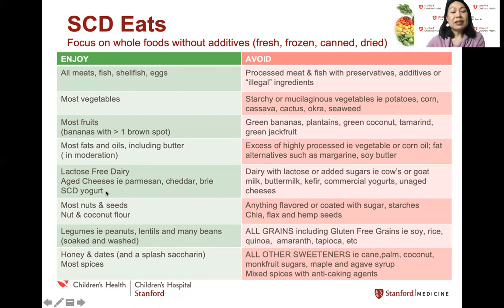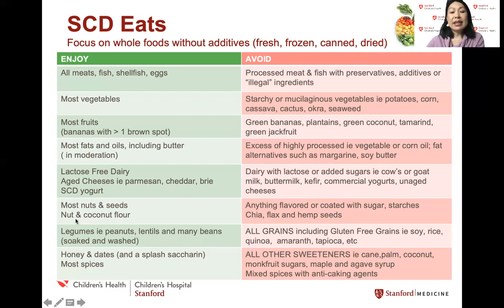The probiotics in the yogurt and other fermented foods are really highly encouraged, because we know that fermented foods and eating live culture probiotics can help expand the diversity of microbiota in your GI tract, and it also reduces inflammatory cytokines as compared to taking probiotics encased in a pill form. Most nuts and seeds as well as nut and coconut flours are allowed, and you can't have any nuts that are flavored or coated with sugars or starches. The three exceptions in terms of seeds that you cannot have are chia, flax, and hemp seeds.